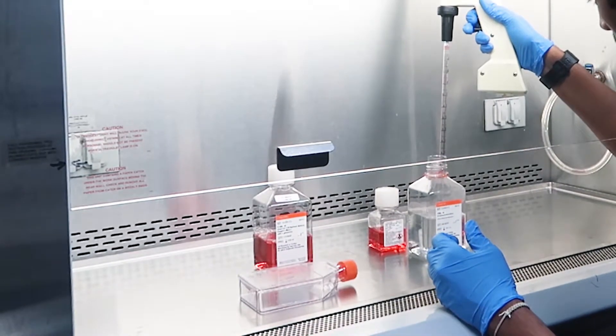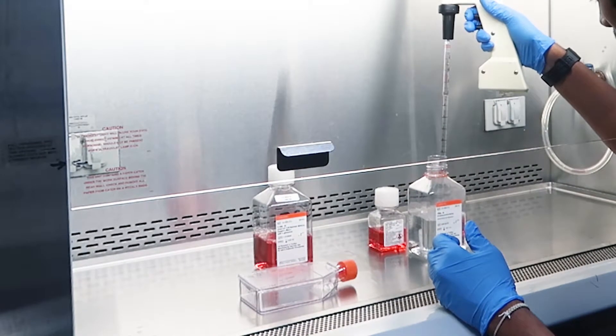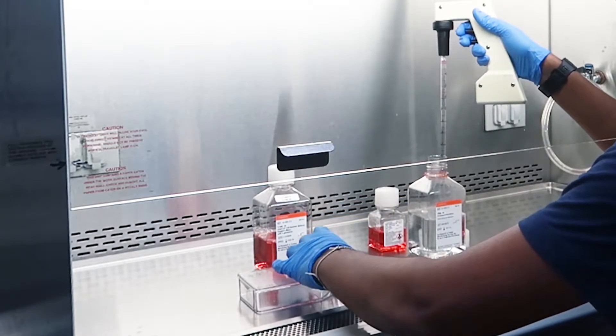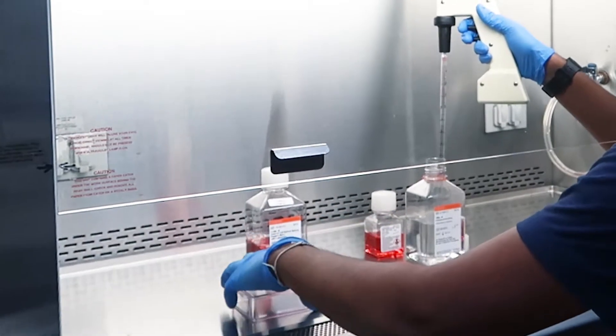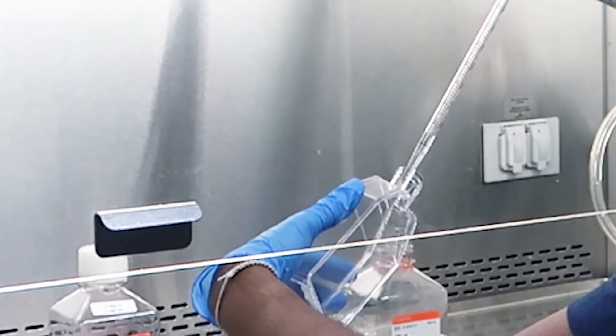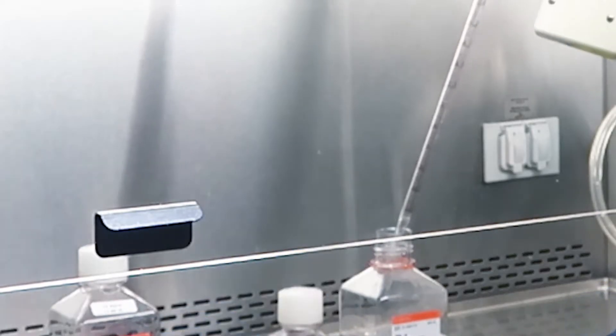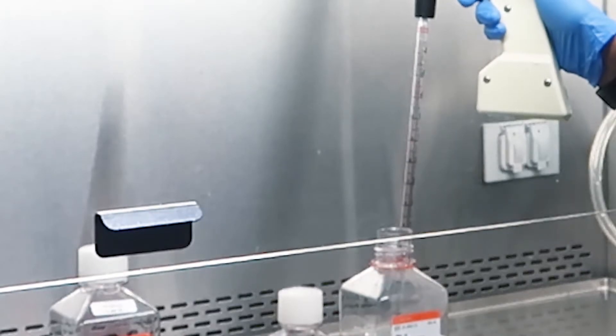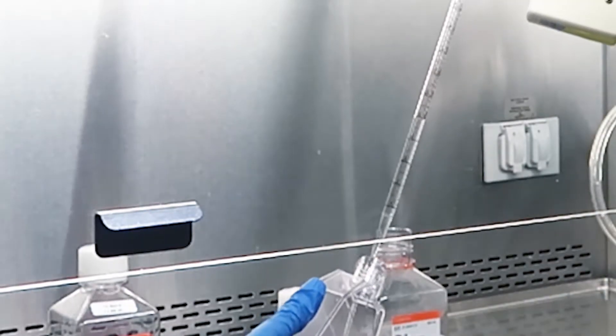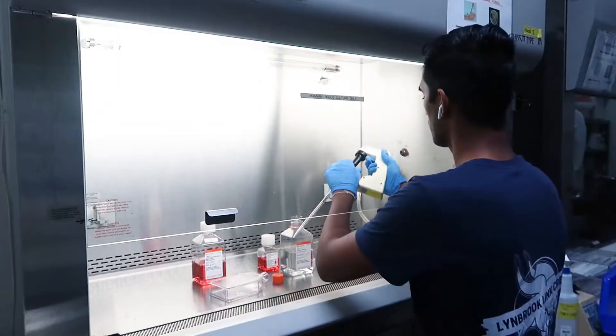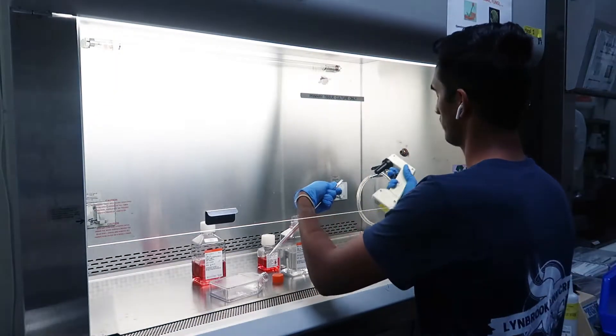Now I've already gone over the serological pipette pump, but just as a reminder, the top button is to pull up your medium, and the bottom button is to release your medium as we're doing here. Now make sure, when you release this PBS, that you do not directly release it onto the cells to avoid dislodging the cells. And so make sure you hold the flask skewed so that the PBS is released onto the sidewall.